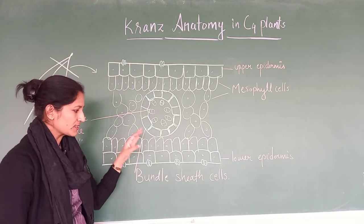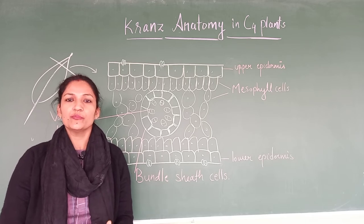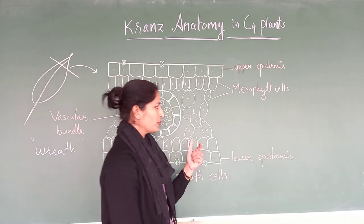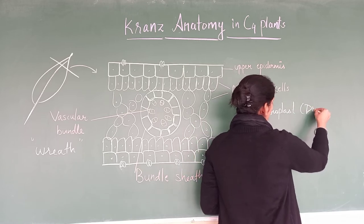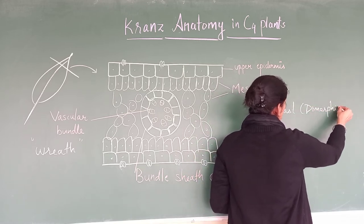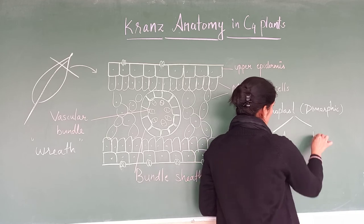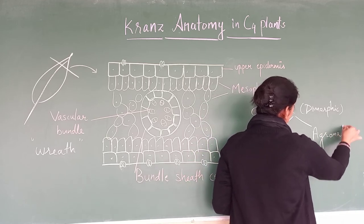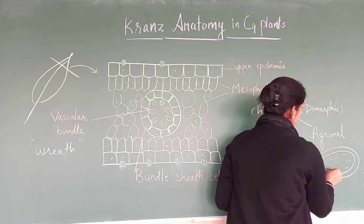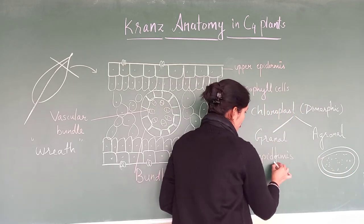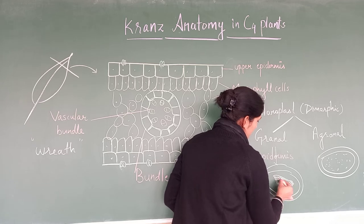So, these bundle sheath cells have a different type of chloroplast as compared to that of the mesophyll cells. This C4 plant has two types of chloroplasts, and that is dimorphic. One is in which grana is present — granal chloroplast — and one in which grana is absent — agranal chloroplast. The agranal one is only stroma, with no granum, and the granal one is the normal type which we have read about, with grana present.